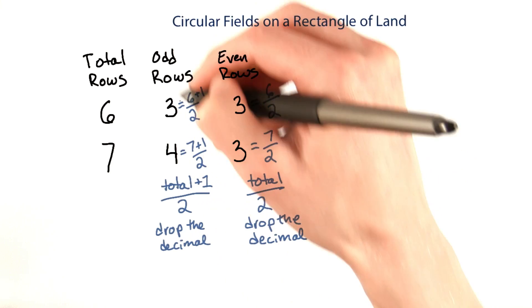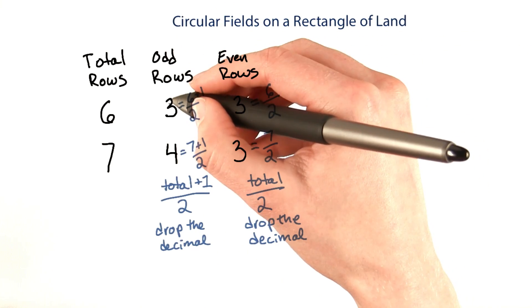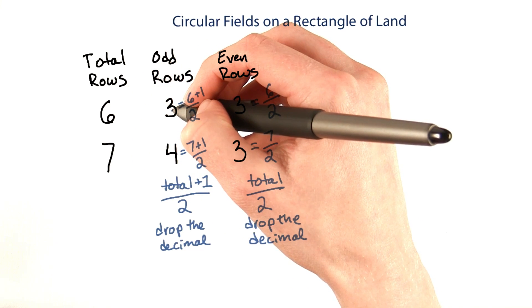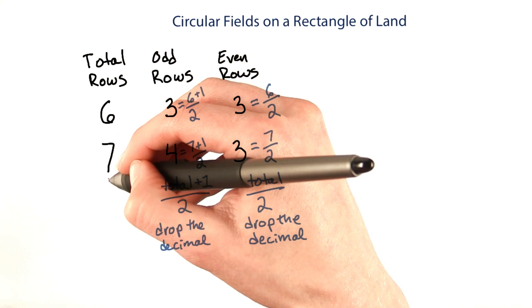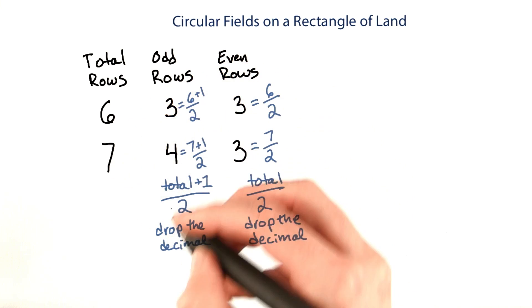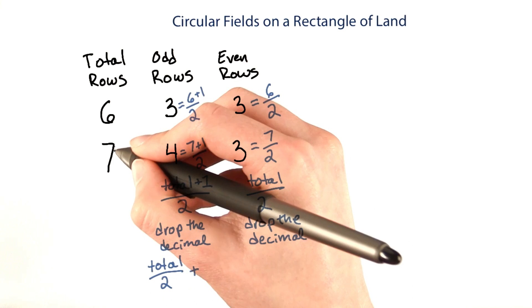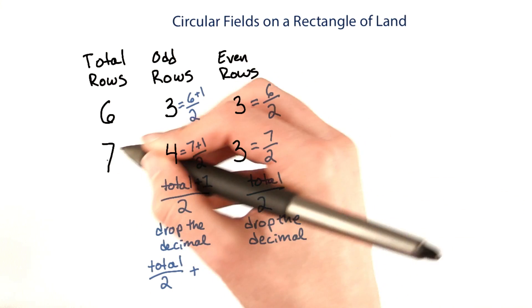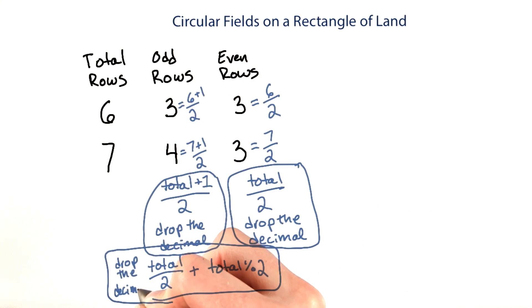There's another way you could calculate the odd rows. You could say that the odd rows are always the total number of rows divided by two, and then you add one if the total number of rows is odd. So that would be the total number over two plus one if seven is odd. And if seven is odd, then seven mod two would be one. So total mod two. Save these for later. And you could also try this one.